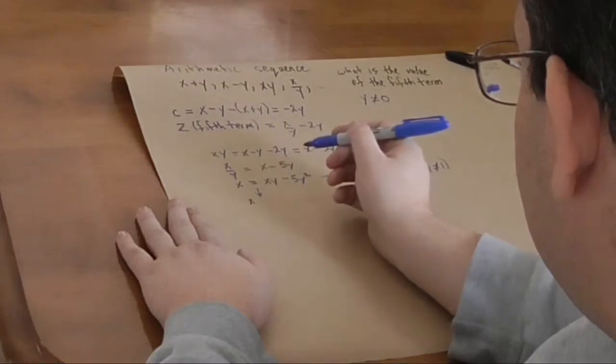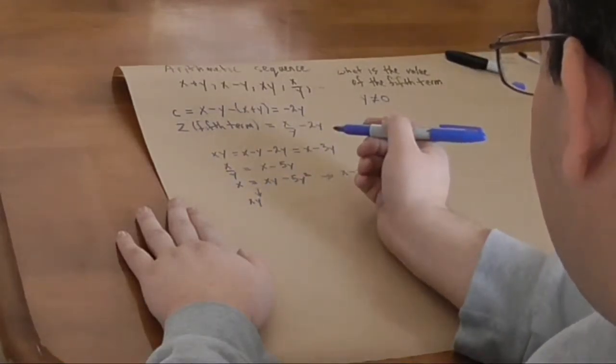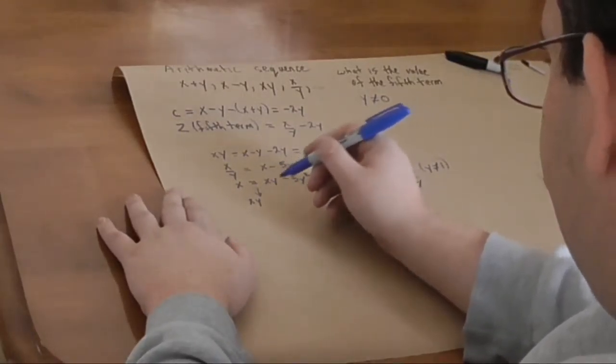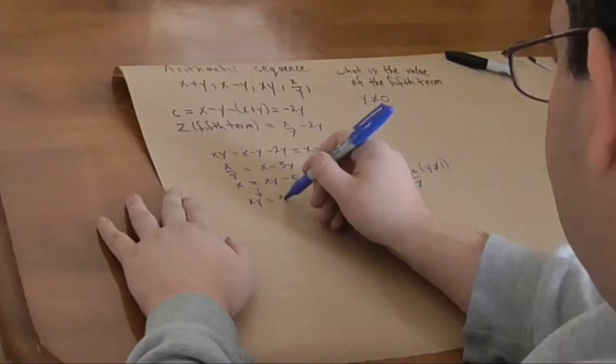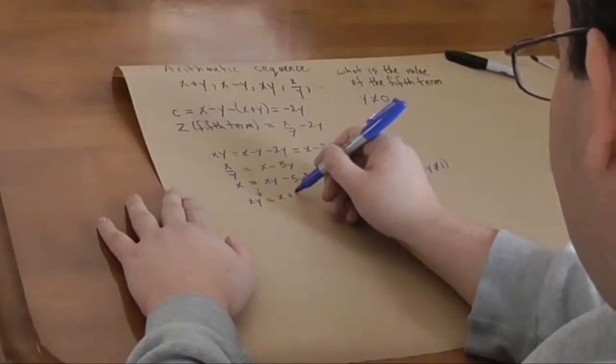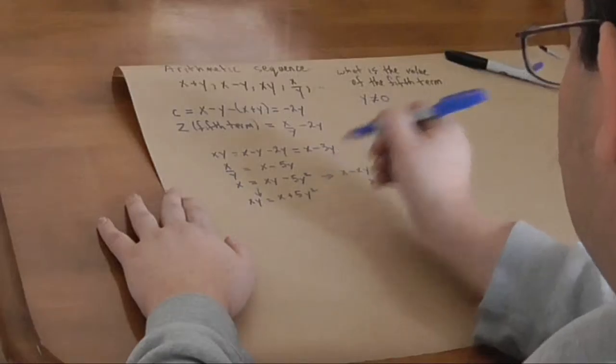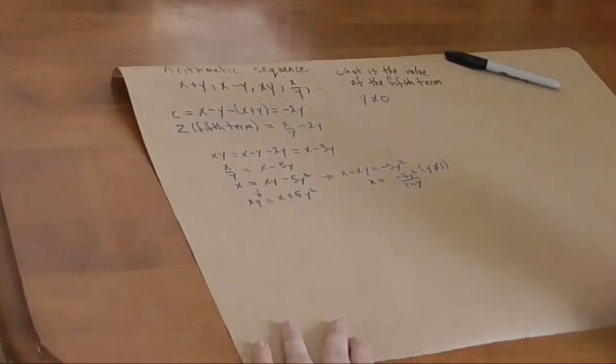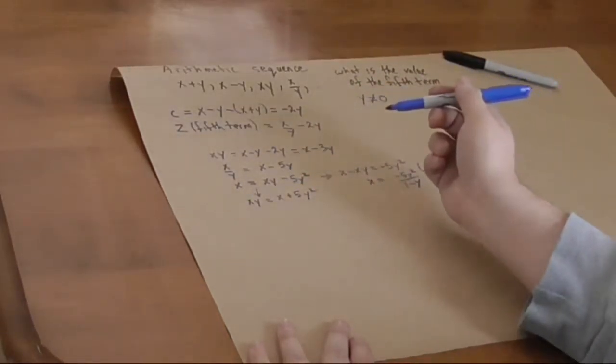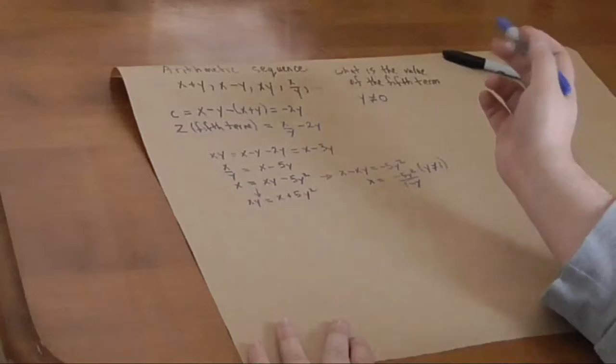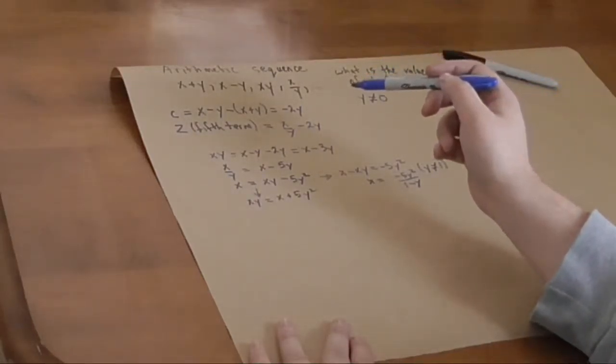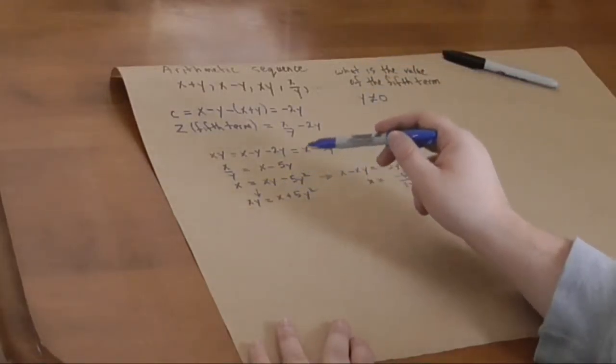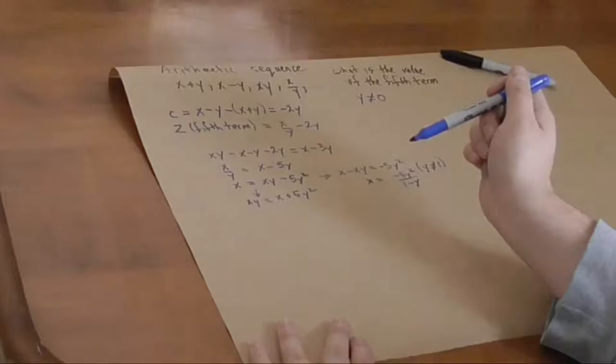That means xy equals x plus 5y squared. Because we just add 5y squared to both sides. So far, so good. Now, here's the fun part. Now, we set the two equal on xy.